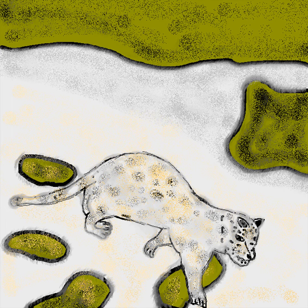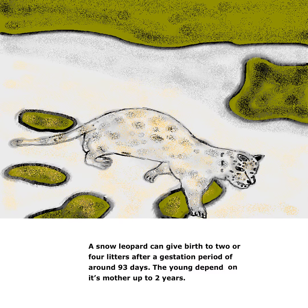A snow leopard can give birth to 2 or 4 litters after a gestation period of around 93 days. The young depends on its mother up to 2 years.